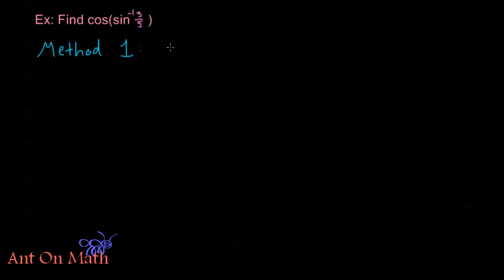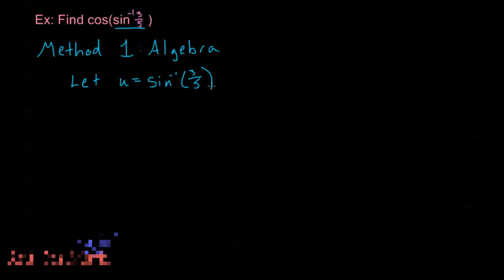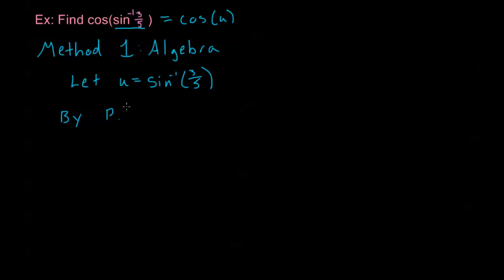Let's look at Method 1, which uses algebra — in particular, our Pythagorean identity. We'll let u be the interior part, so let u equal sine inverse of three-fifths. Now we're looking for cosine of u. By the Pythagorean identity, cosine of u equals plus or minus the square root of one minus sine squared u.